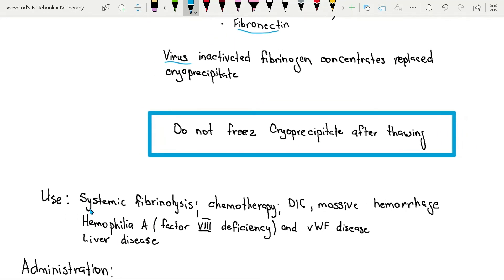Cryoprecipitate is mainly used in conditions with systemic fibrinolysis, such as those resulting from certain types of chemotherapy or disseminated intravascular coagulation, massive hemorrhage, hemophilia A, von Willebrand factor disease, or liver disease.